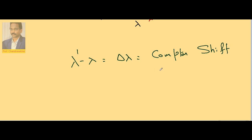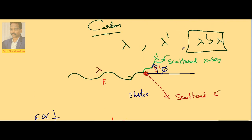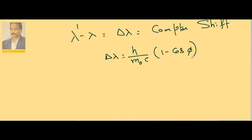The Compton shift is the difference in wavelengths of the scattered and incident x-rays. Delta lambda is given by (h / m₀c) × (1 − cos φ), where phi is the angle of observation — the direction in which you place the spectrometer. At different angles you get different scattered x-rays, so scattered x-rays are possible in all directions. The quantity h / m₀c is called the Compton wavelength.